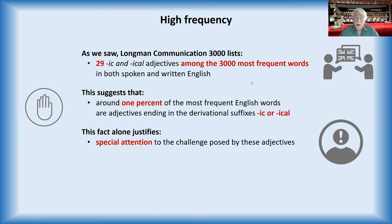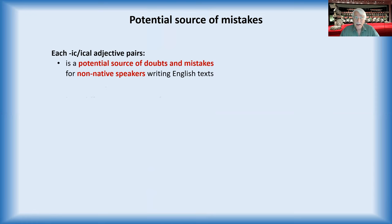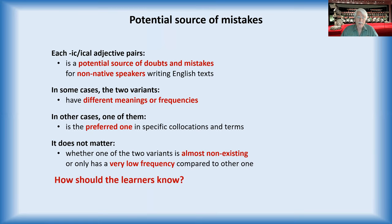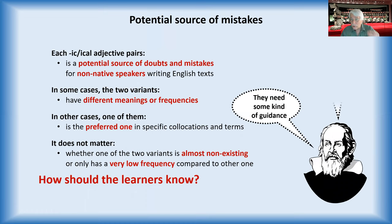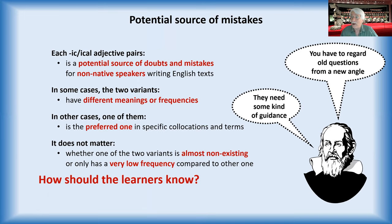Any pair is a potential source of doubt and mistakes for non-native speakers. They can have different meanings or frequencies, or in some cases there is a preferred one in a specific collocation or term. There are some of them that are almost non-existent, but the problem is that learners, non-native speakers, they'll not know. That is the problem. And that means that we have to give them some kind of guidance and we also have to approach the whole idea from a new angle, as Galileo said, and that's the reason why we had him on the front page.